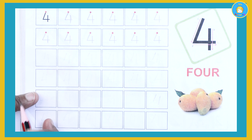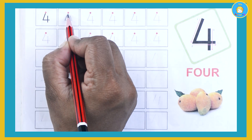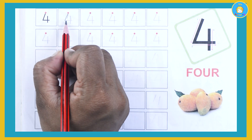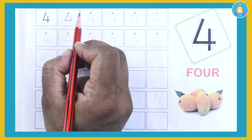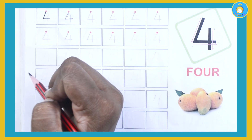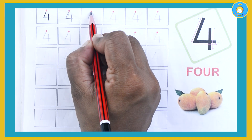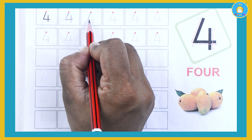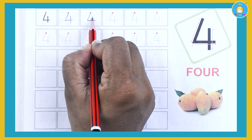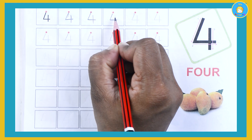Make number 4. Make one sliding line, one sleeping line and connect to one standing line. It's number 4. Again: one sliding line, sleeping line and standing line. It's number 4.